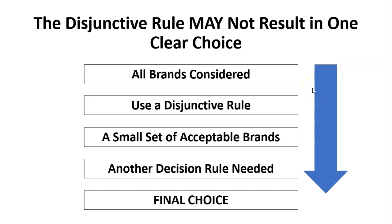One of the problems with the disjunctive rule — and the conjunctive rule as well — is we don't necessarily have a clear choice. So it's usually used as a way of getting from a lot of brands down to a smaller set of brands, and then from there we typically use another decision rule.